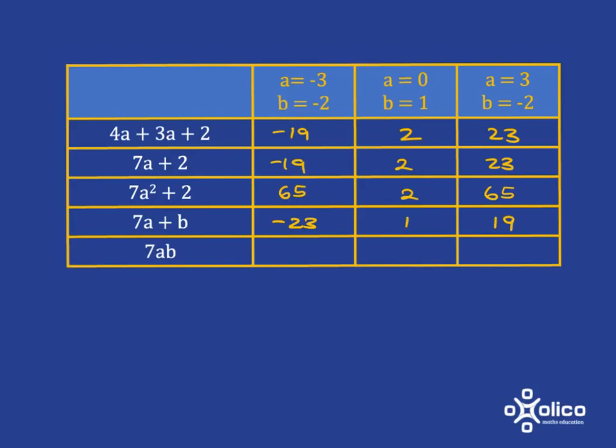And then for this last one, we're going to have 7 times negative 3, which is negative 21 times negative 2, which is going to be positive 42. And again, we'll fill in the other two in a similar way.